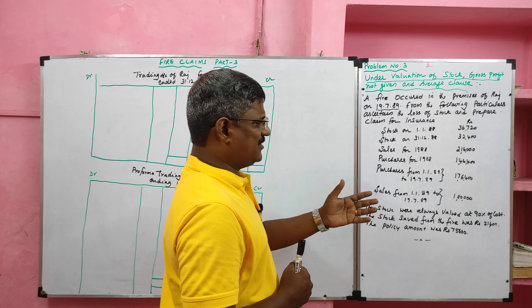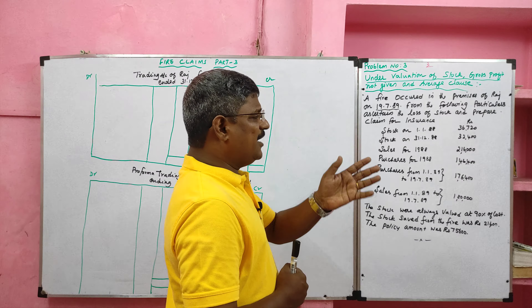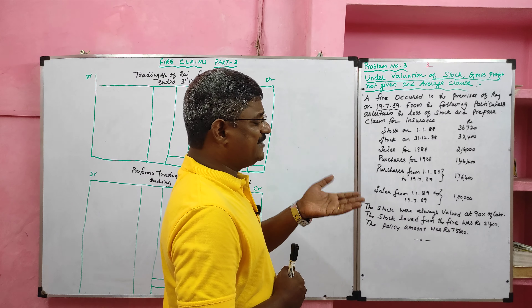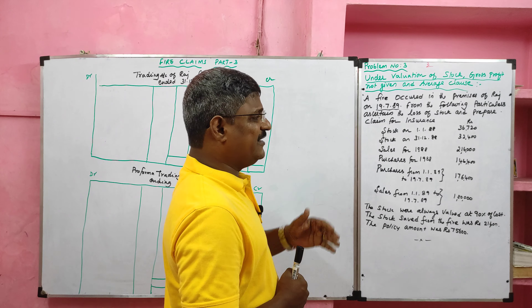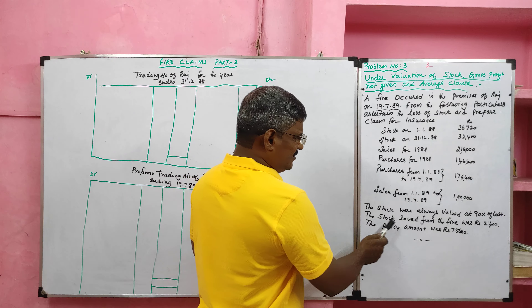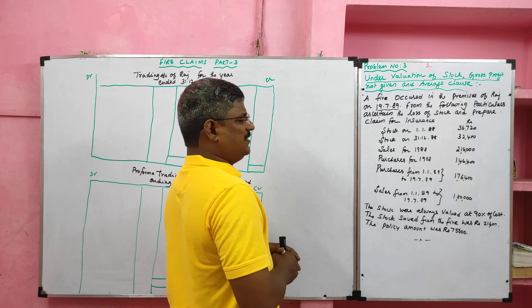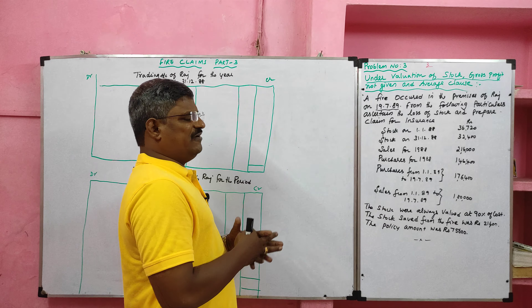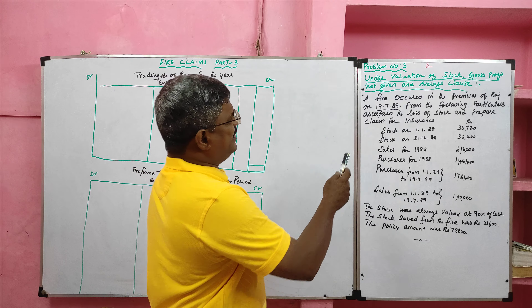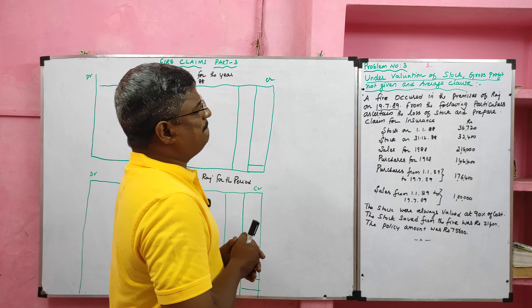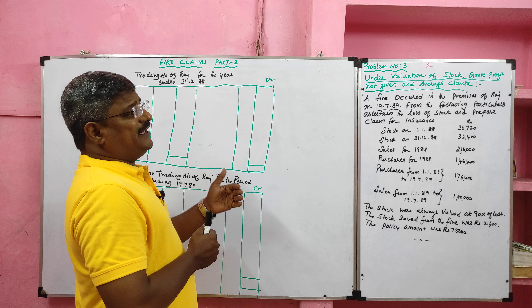Since the stocks are valued at 10% below the cost price — that is, valued at 90% — we have to increase the opening stock and closing stock values by converting them to 100%. The stock saved from the fire was ₹21,600, and the policy amount was ₹75,600, so we will apply the average clause. The fire occurred on 19th July 1989, and since gross profit is not given, we have to find the gross profit ratio of the previous year.